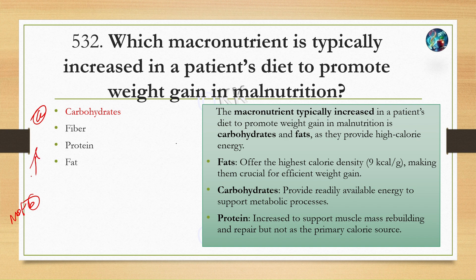Carbohydrates are easily digested compared to proteins. Fat has the highest calorie density, providing nine kilocalories per gram. Carbohydrates readily provide energy, while protein is generally important for rebuilding muscle mass.